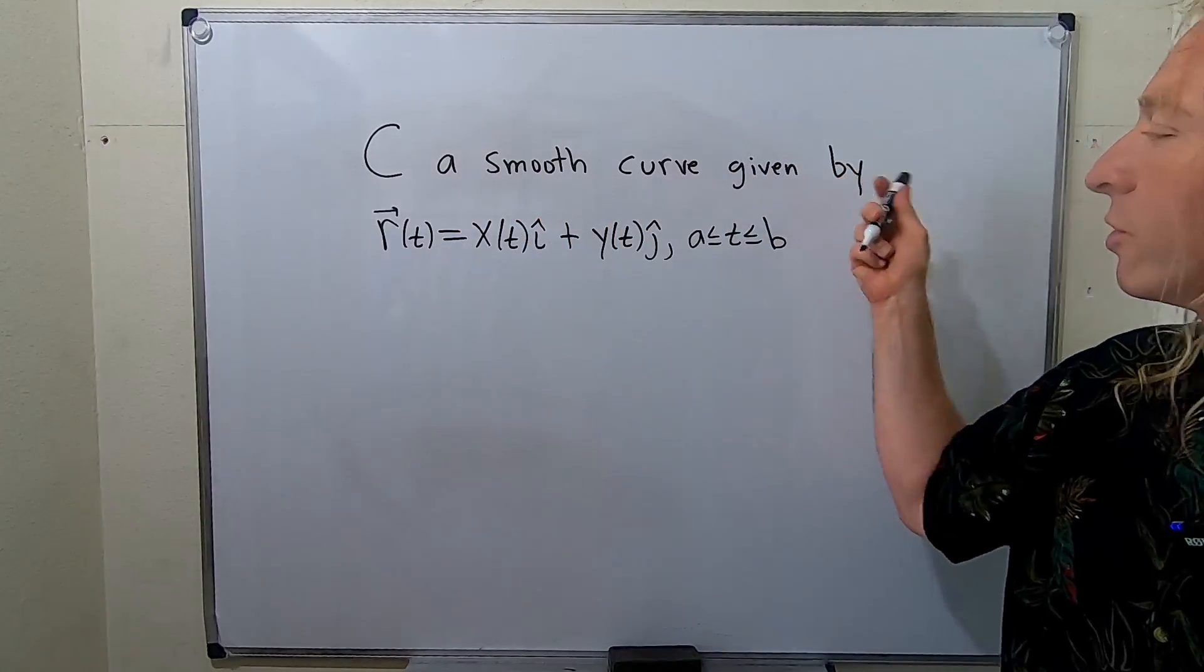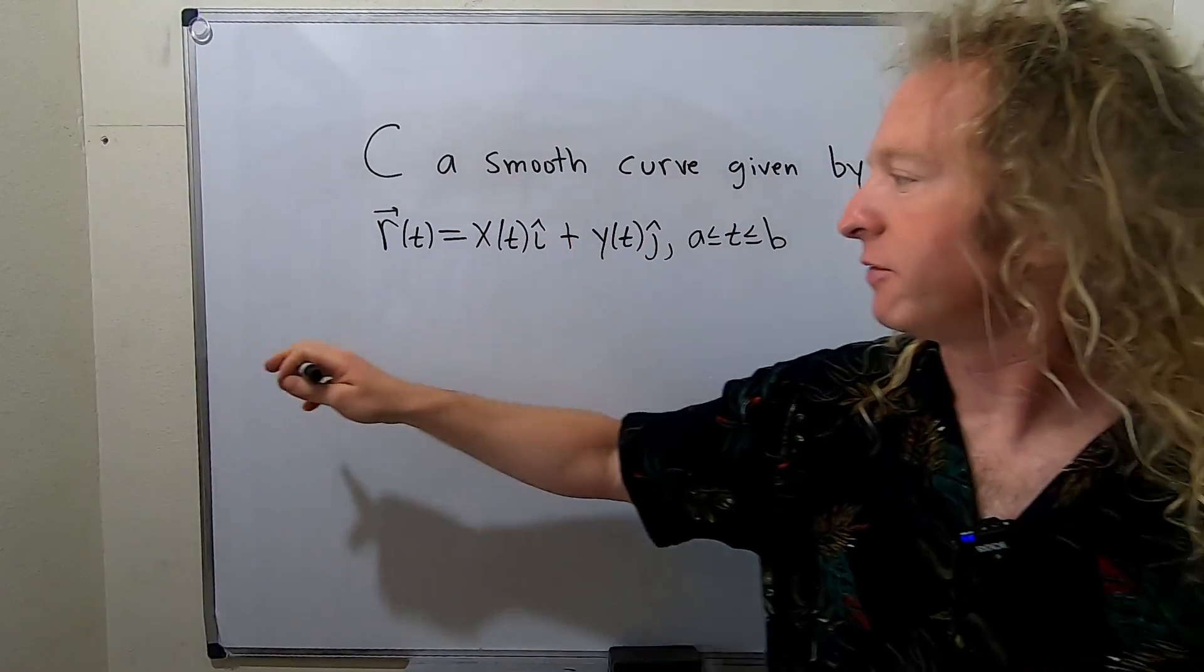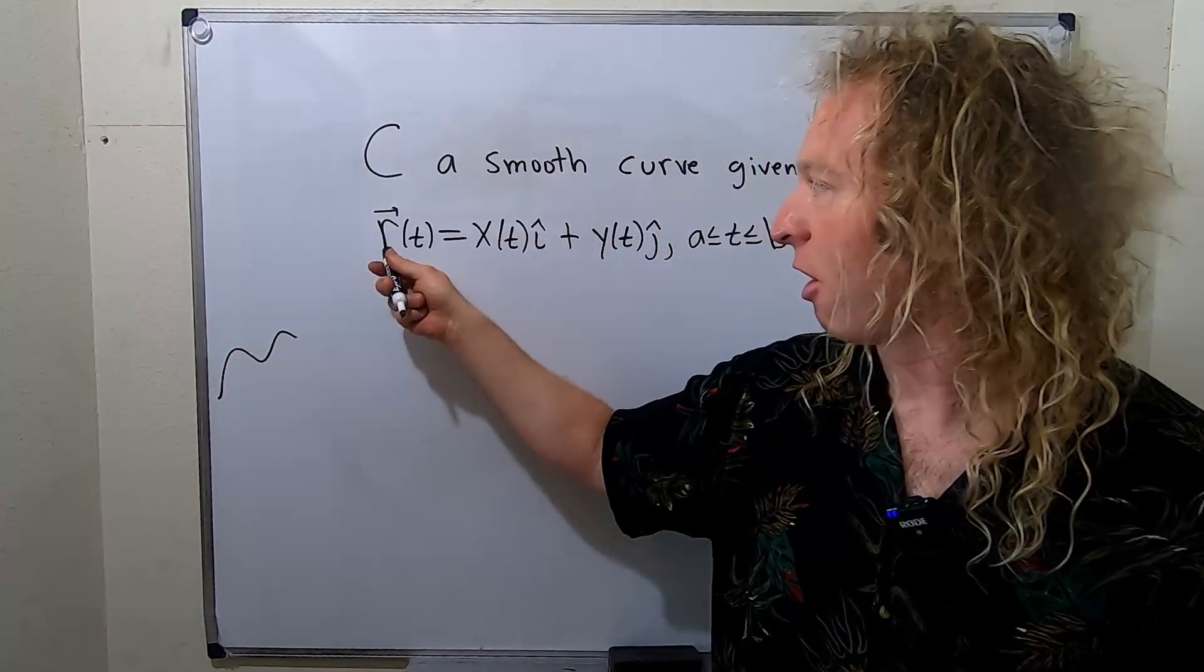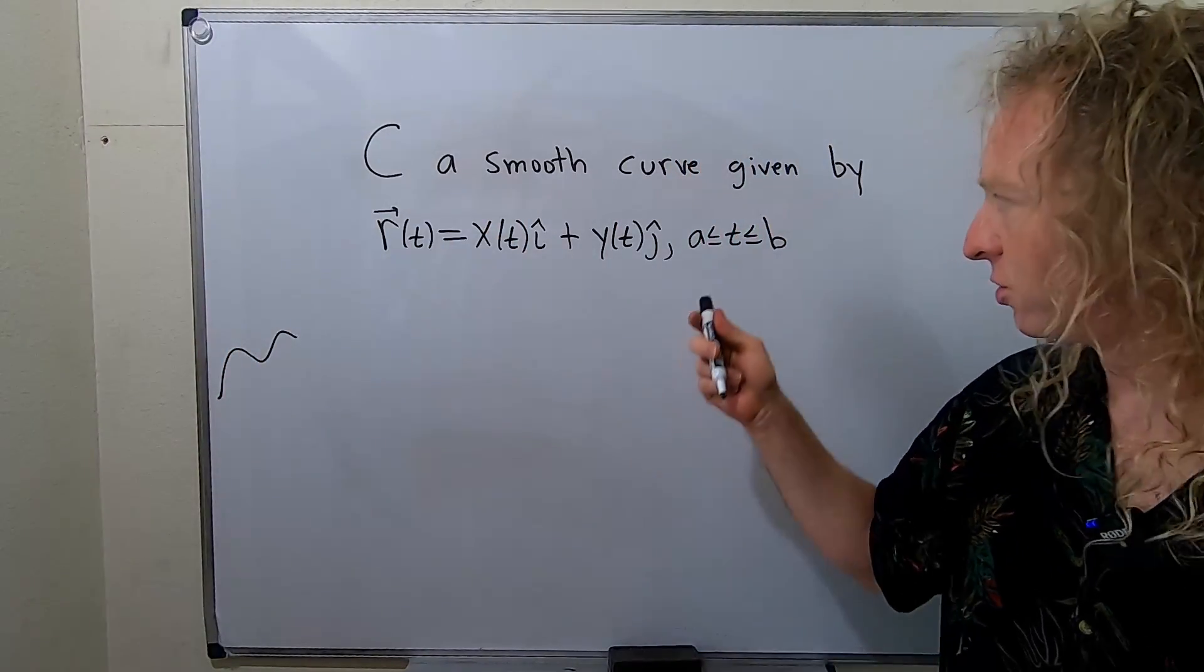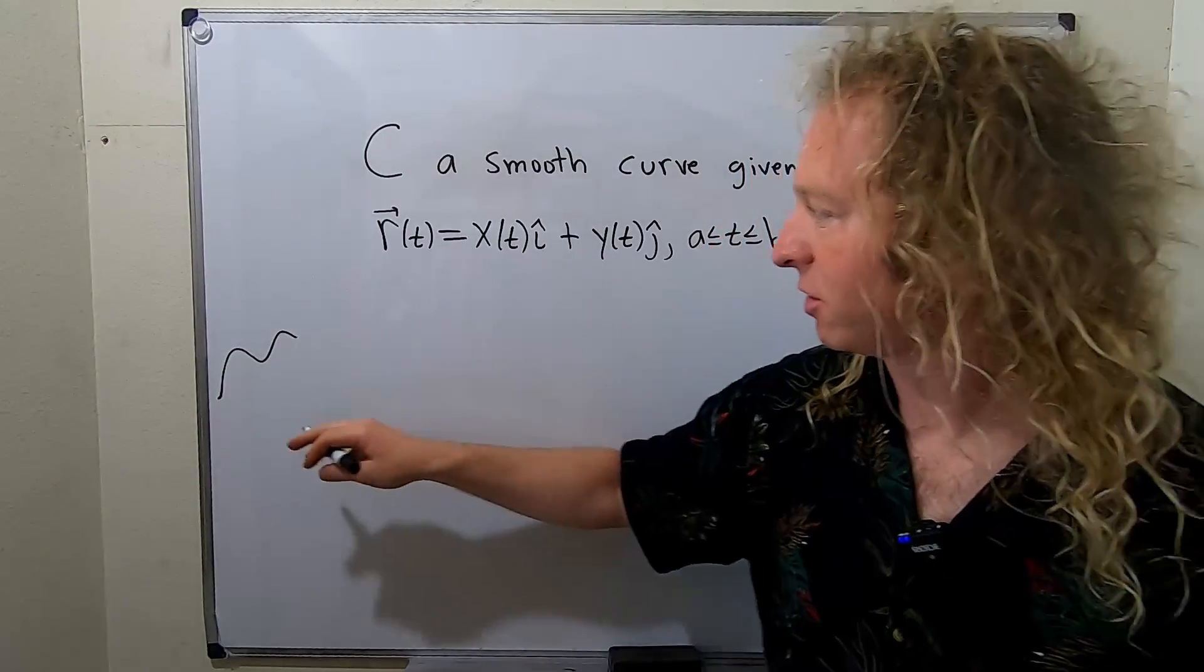So let C be a smooth curve, and it's given by this vector-valued function. So we have some curve, maybe it looks like this, and R(t) is a vector-valued function, so you plug in a value of t, which is usually time, and it spits out a vector.